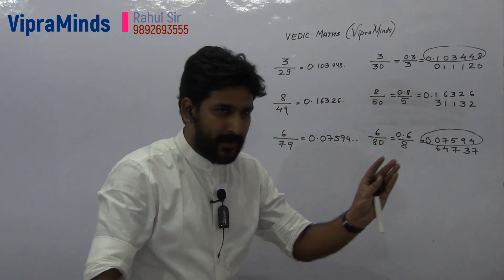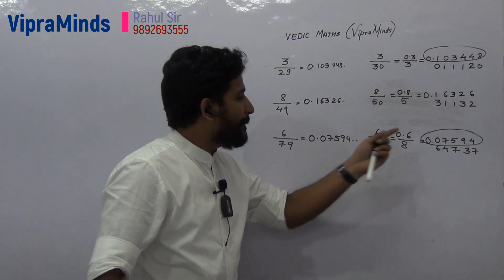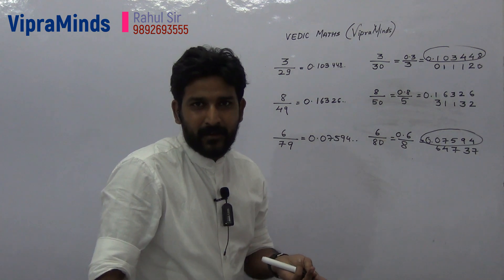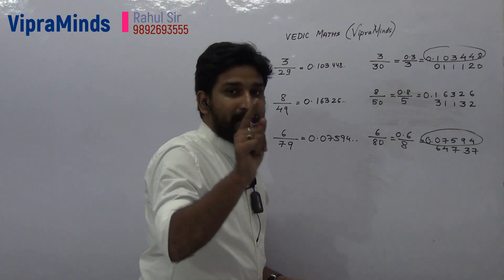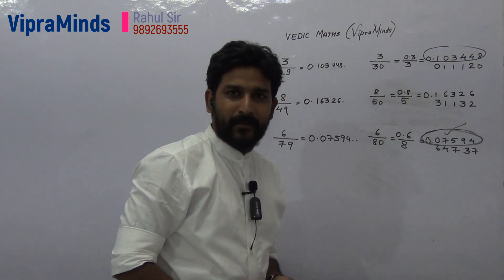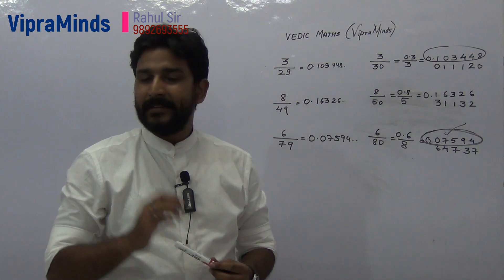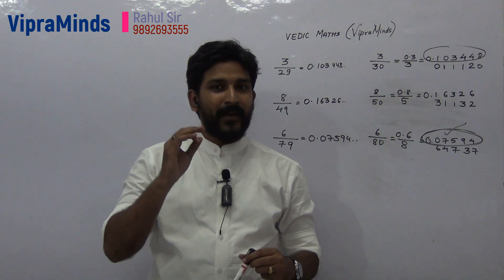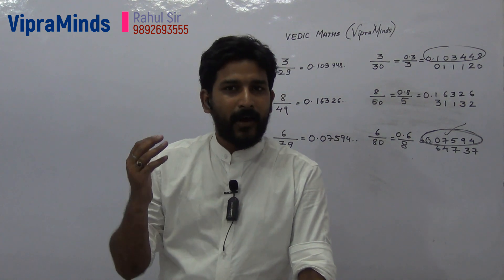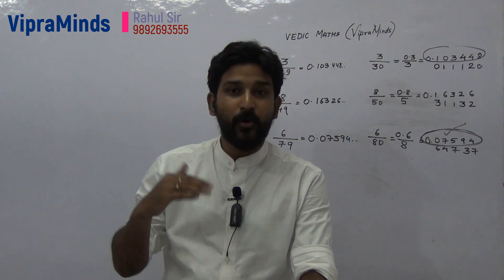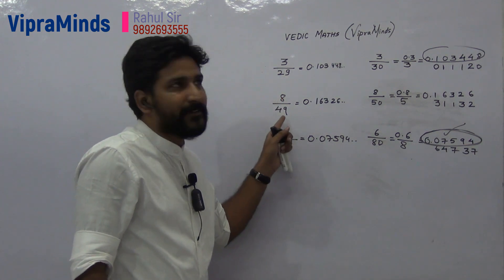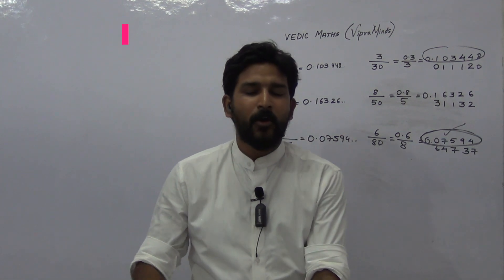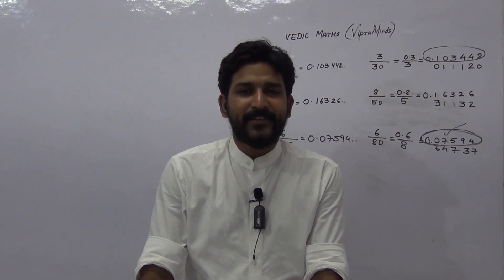Just keep on doing this and you will get a recurring term after a certain value. This is a very easy technique — it's simple division by a single-digit number. So this is how you can divide any number by numbers that end with 9. Hope it is helpful. If you have any doubt, write in the comment section. We will upload more videos on such topics. Please subscribe to our channel for more videos. Thank you.